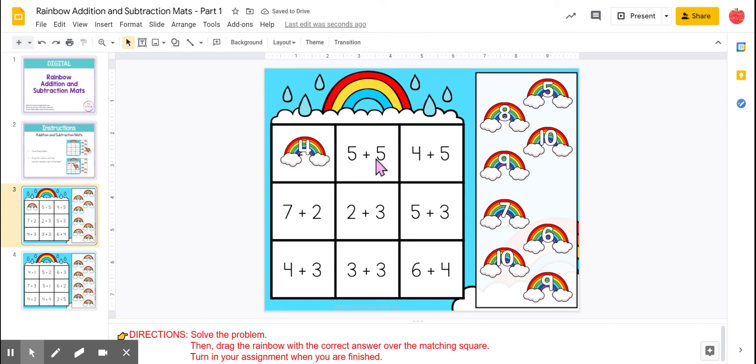Now you can go to the next one. Five plus five. I know a lot of you know this one without even thinking about it. So come over and find the number 10, get your rainbow, and drag it to the mat.